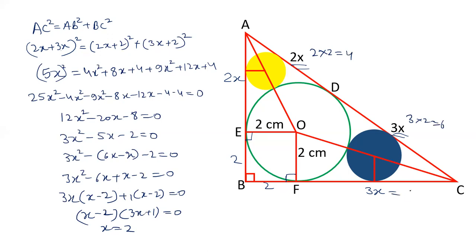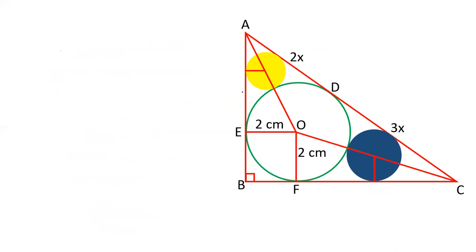So 2x = 4 and 3x = 6. Now we have the values of all sides: AE = AD = 4, CF = CD = 6. Now we have to calculate the radius of the yellow circle as well as the radius of the blue circle. The next step is finding the value of OA, where AE = 4 and OE = 2.